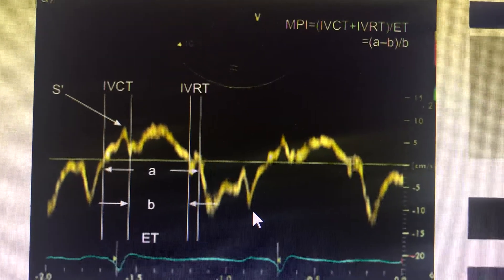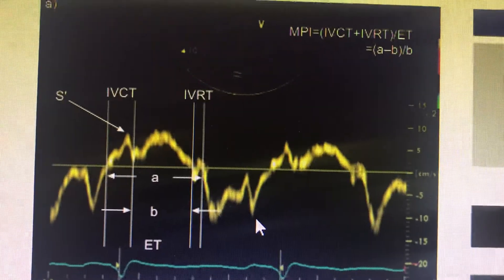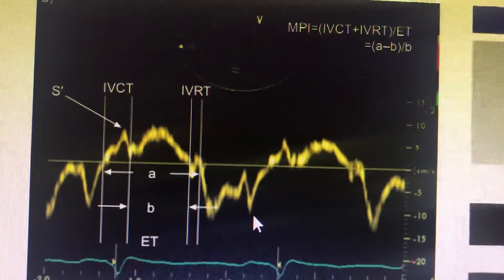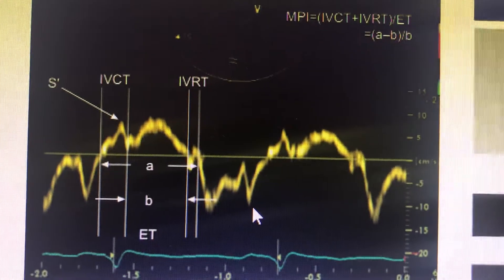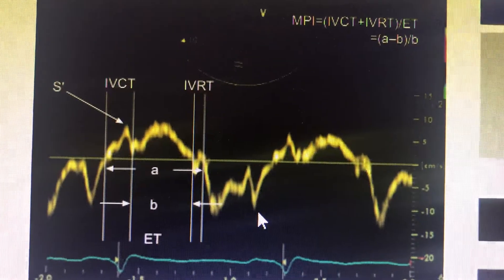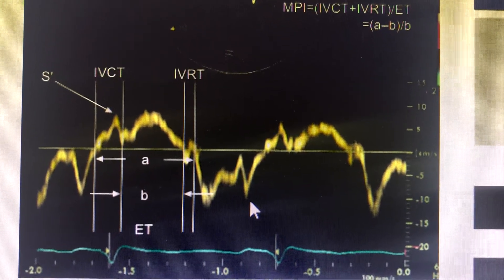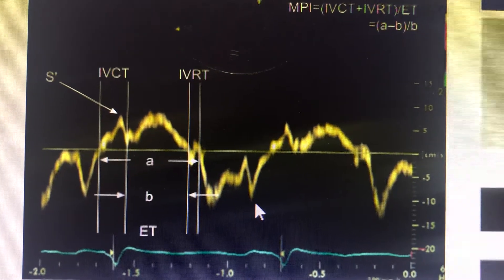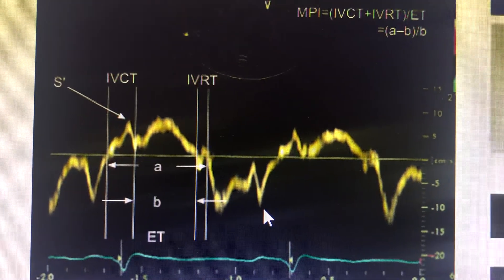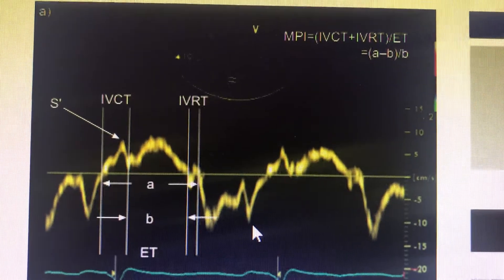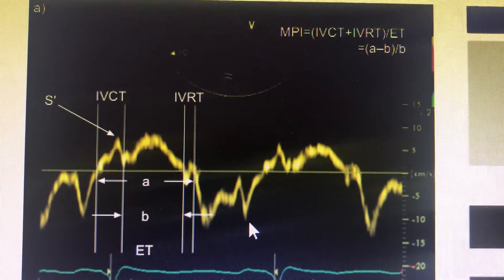These are assessed through RA and RV, including RA volume, RA pressure, TR velocity, pulmonary regurgitation velocity and correlation with right ventricular systolic pressure, pulmonary artery diastolic pressure, pulmonary mean pressure, pulmonary peak systolic pressure, and pulmonary acceleration time.